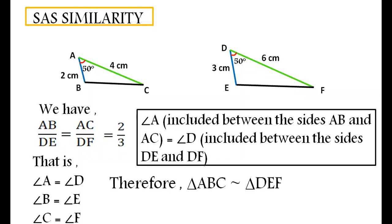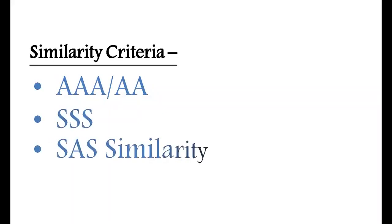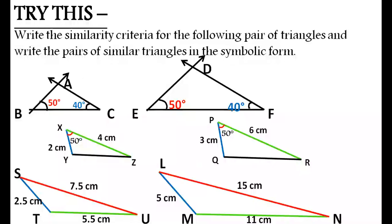Finally, we conclude that two triangles are similar by the following criteria: first, angle-angle-angle or angle-angle; second, side-side-side; and third, side-angle-side similarity. Now, try this: write the similarity criteria for the following pair of triangles and write the pairs of similar triangles in symbolic form. Thank you, and keep smiling.